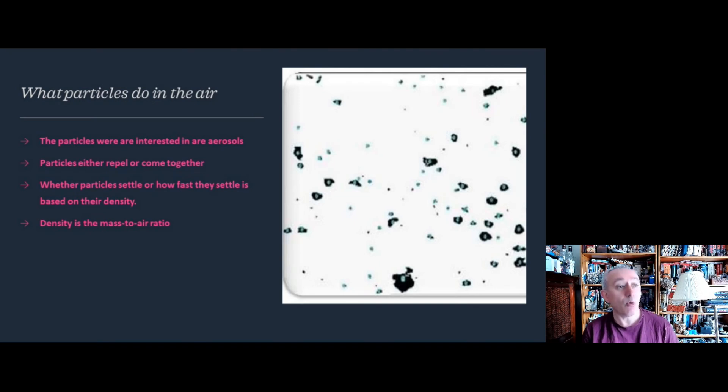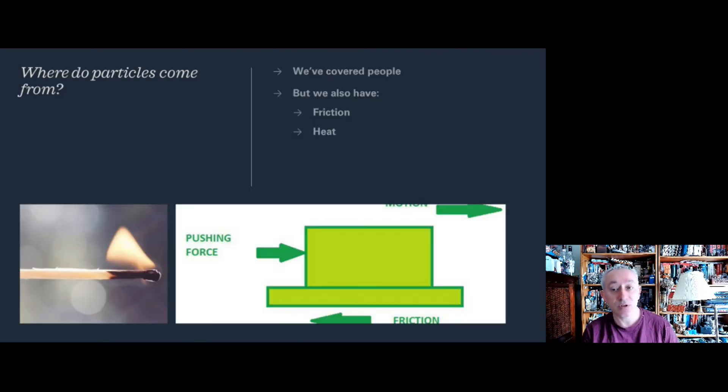Where do particles come from? We've covered people in previous videos - we shed a lot. But we also have particles from friction - two surfaces rubbing together, with the opposite effect of the pushing force creating friction. This could be a conveyor belt, sliding tray, or even walking.